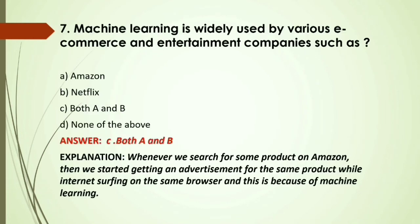MCQ: Machine learning is widely used by various e-commerce and entertainment companies such as — A) Amazon; B) Netflix; C) Both A and B; D) None of the above. Answer: C, both A and B — whenever we search for a product on Amazon, we start getting advertisements for that same product while browsing, and this is because of machine learning.